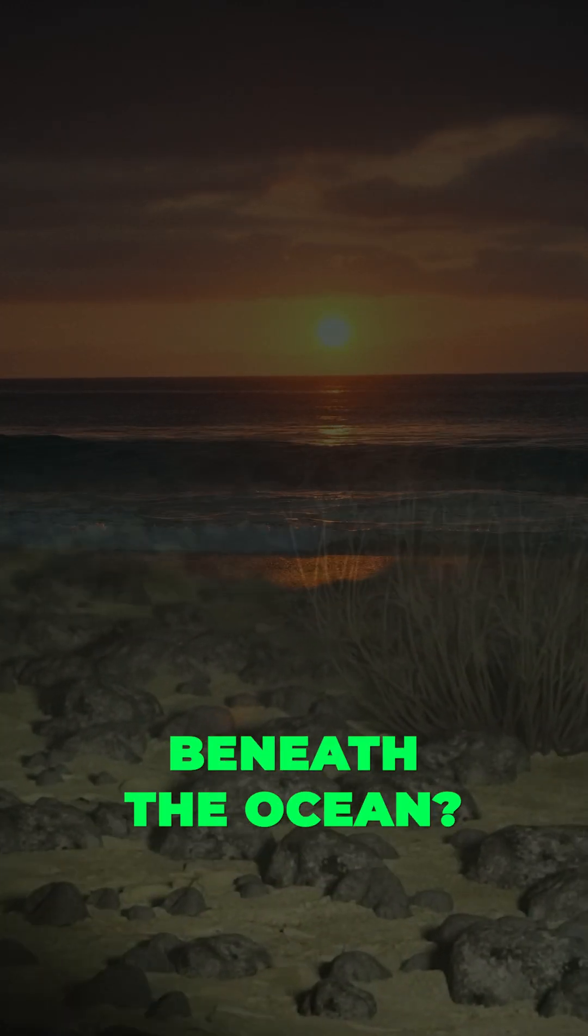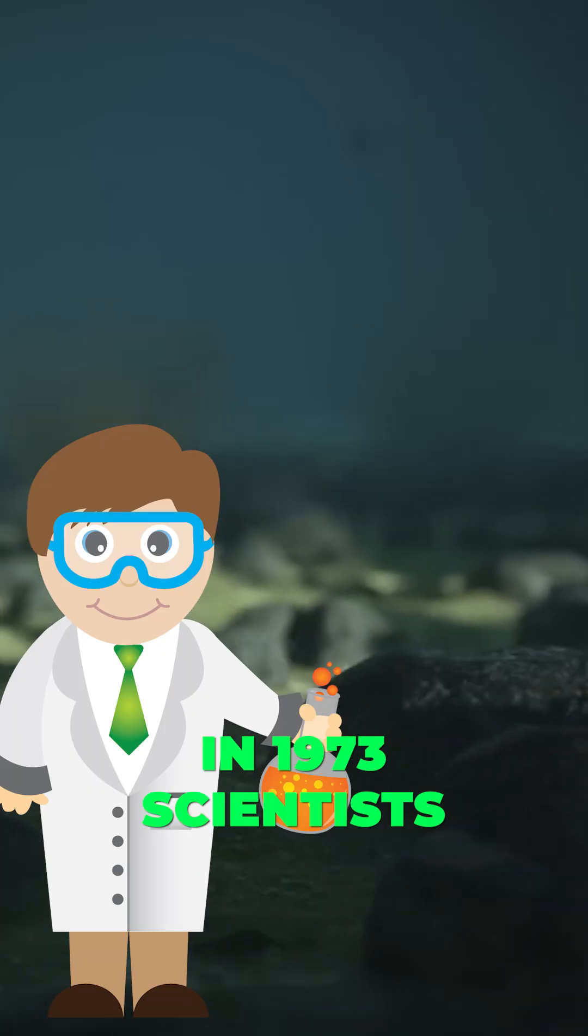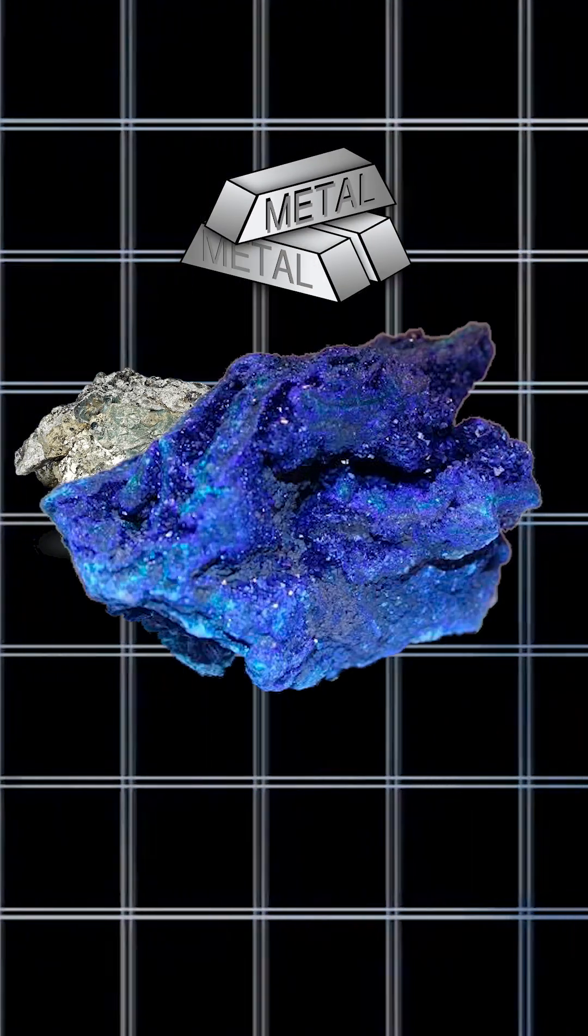Ever wondered what lies two and a half miles beneath the ocean? In 1973, scientists found potato-shaped nodules rich in metals like manganese, cobalt, and nickel.